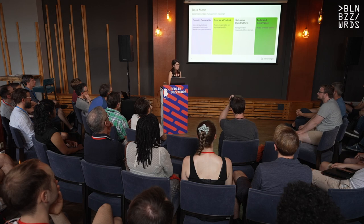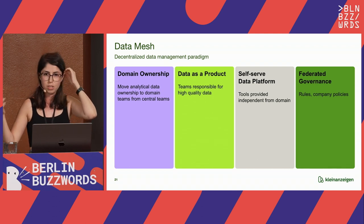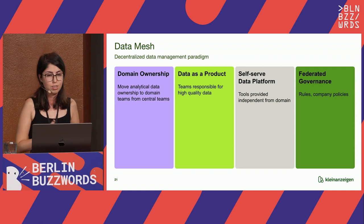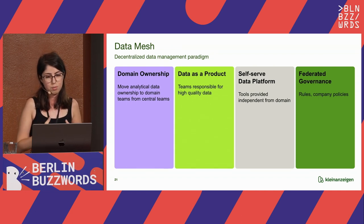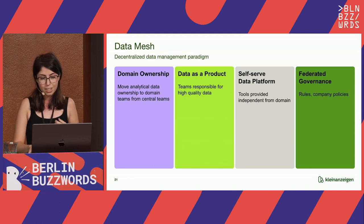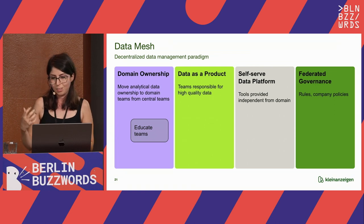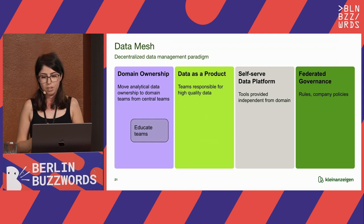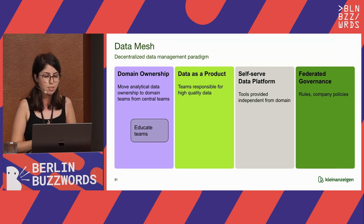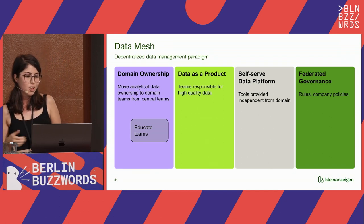So what does this mean for the teams and for the entire organization with data mesh? The domain ownership is now visible because we created this domain-based architecture, but we still need to educate teams about what ownership means. Sometimes there is resistance, so it is our job to organize workshops and get them learning DBT and understanding what it means to have an analytical data pipeline in their team. These concepts are still lacking, so we need to work on this.